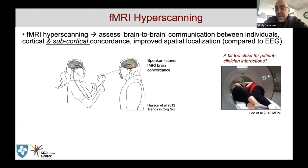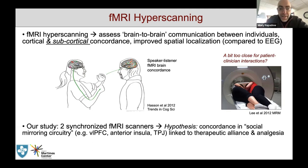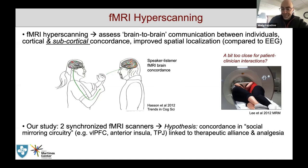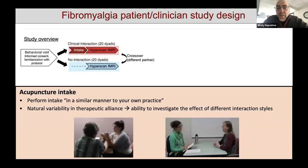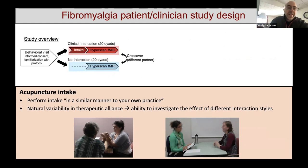So how do we do fMRI hyperscanning? There are coils that allow more than one individual inside a scanner, but this is probably not appropriate for a patient-clinician interaction — so we decided this was not the way to go. In our study we had two synchronized functional MRI scanners. Our hypothesis was that concordance in social mirroring circuitry — which includes ventrolateral prefrontal cortex, anterior insula, and temporal parietal junction (TPJ) — is linked to therapeutic alliance and analgesia. We recruited fibromyalgia patients and acupuncturists as clinicians.